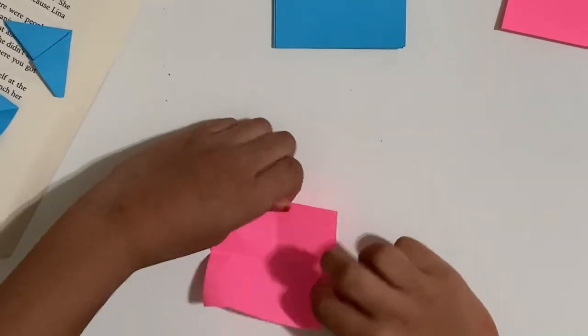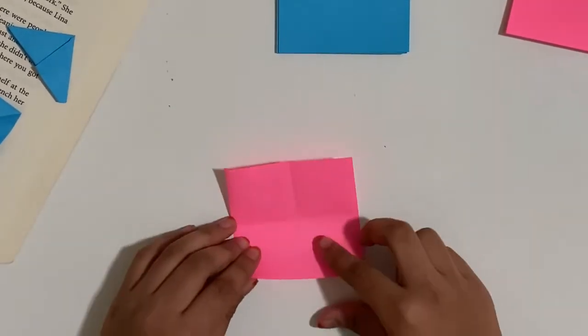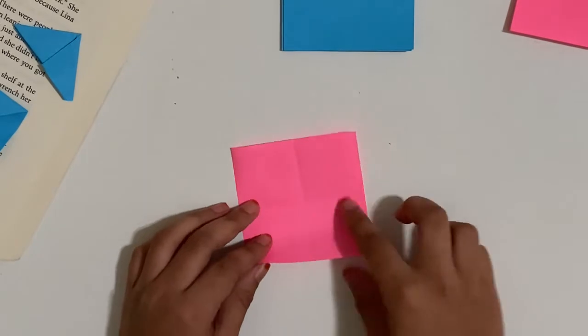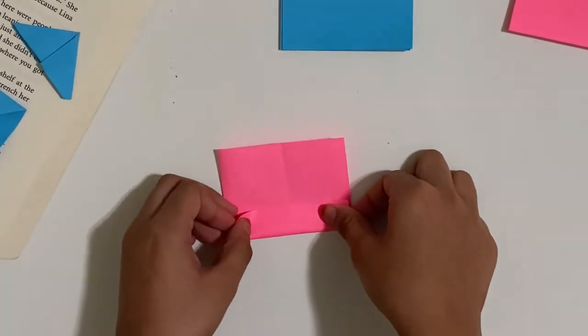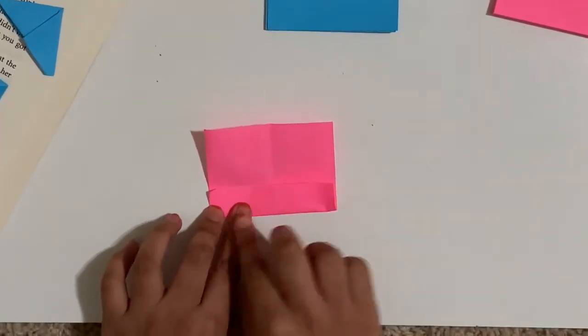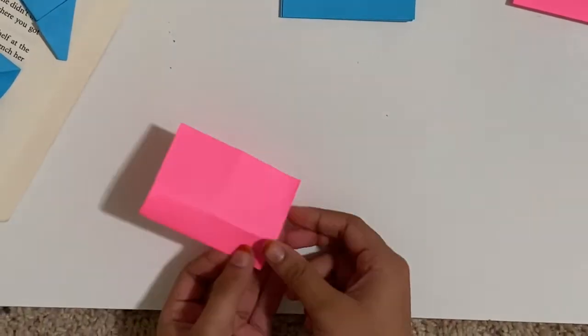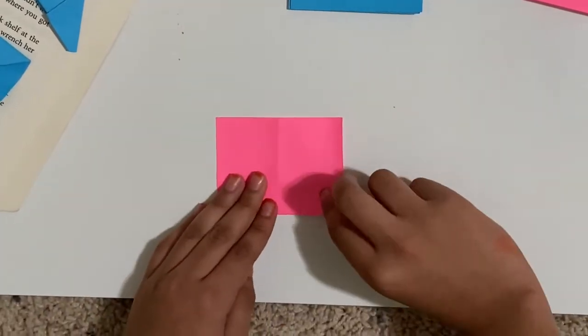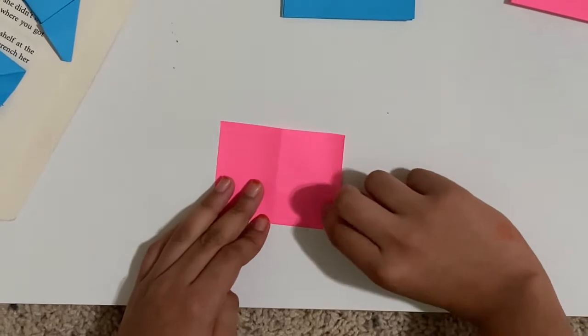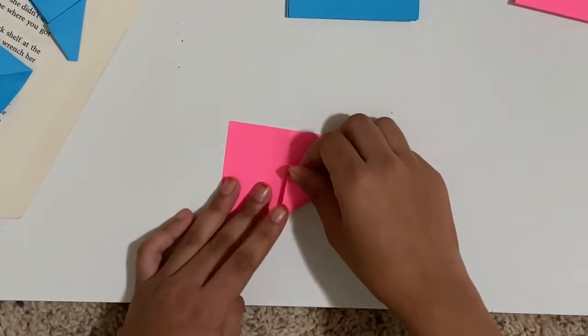And now we are going to take this edge and put it to our middle crease, like this. And we are going to flip that over and put this corner right here to this middle crease that we made, like this.